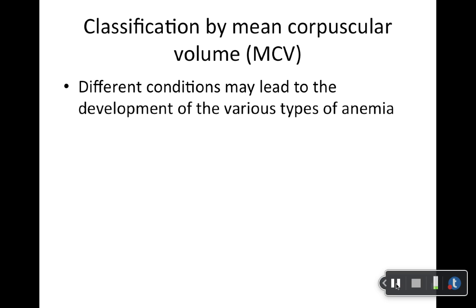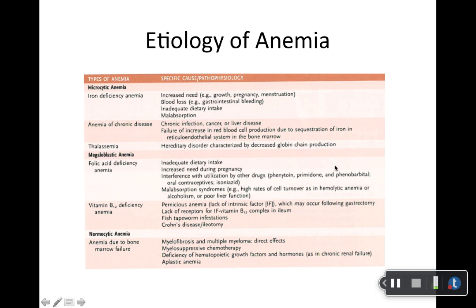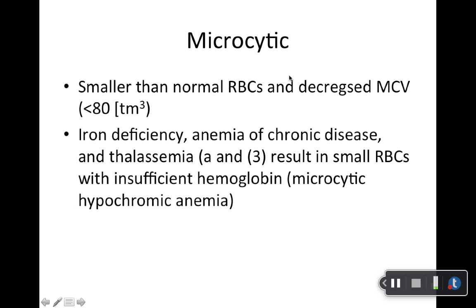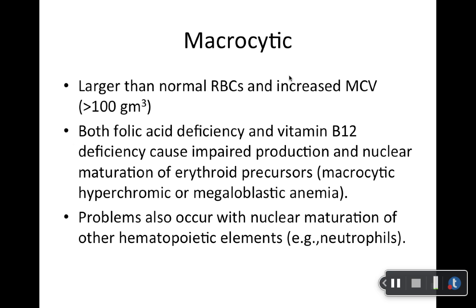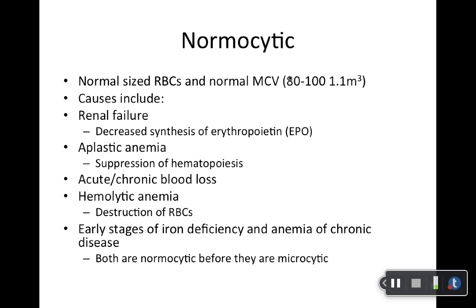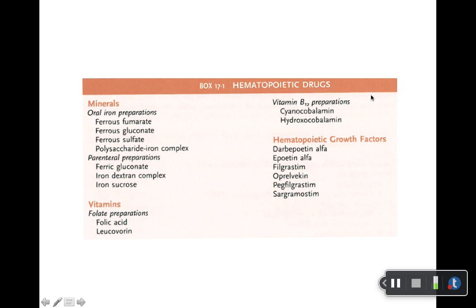Classification by MCV — just read through that. Etiology — again, read through this. I won't be pulling test questions from here specifically, but this will probably help you with some of the drugs and their mechanism of actions. Microcytic anemia, macrocytic, and normocytic — just read through these slides, but don't worry about heavy test questions from my course.